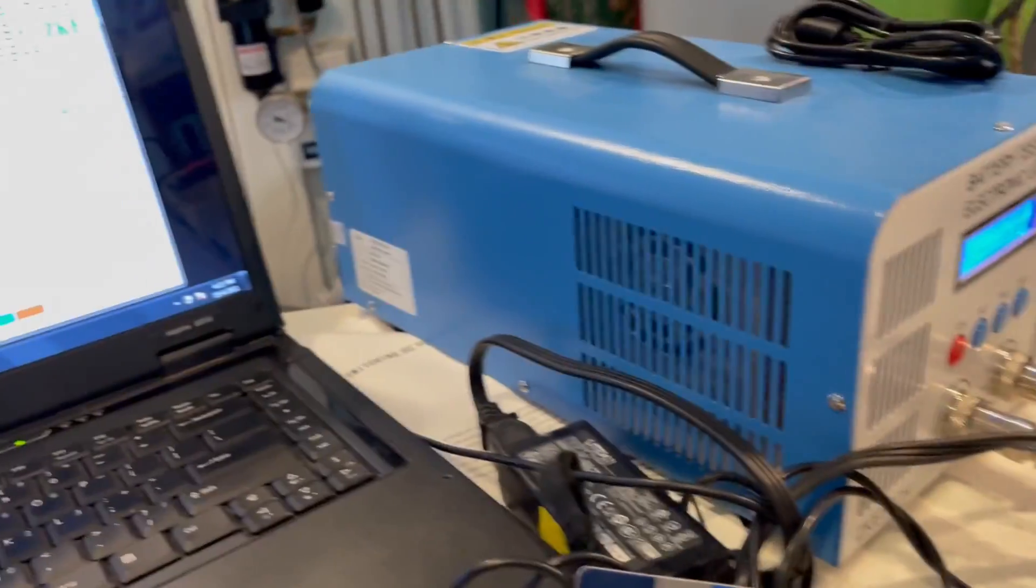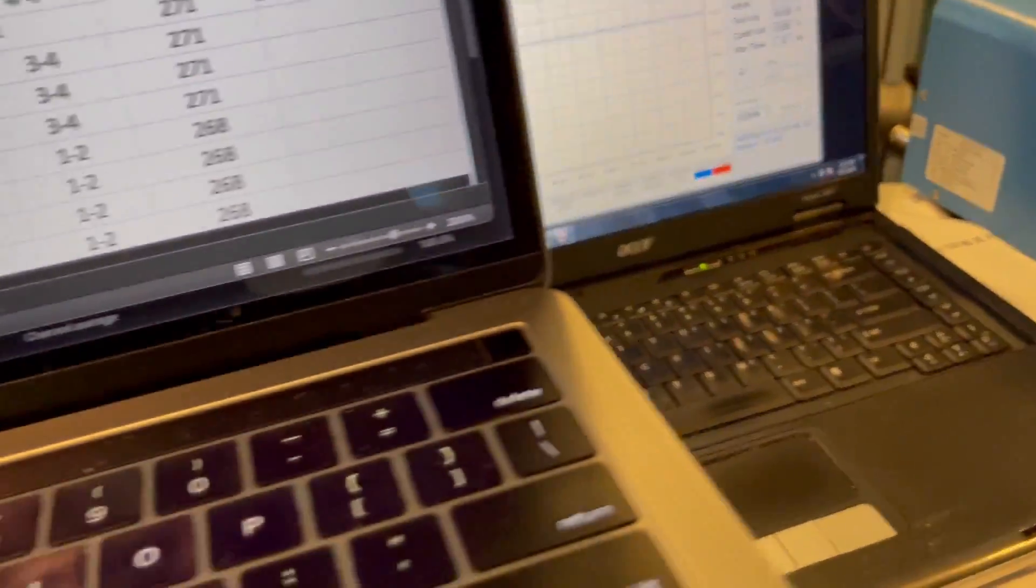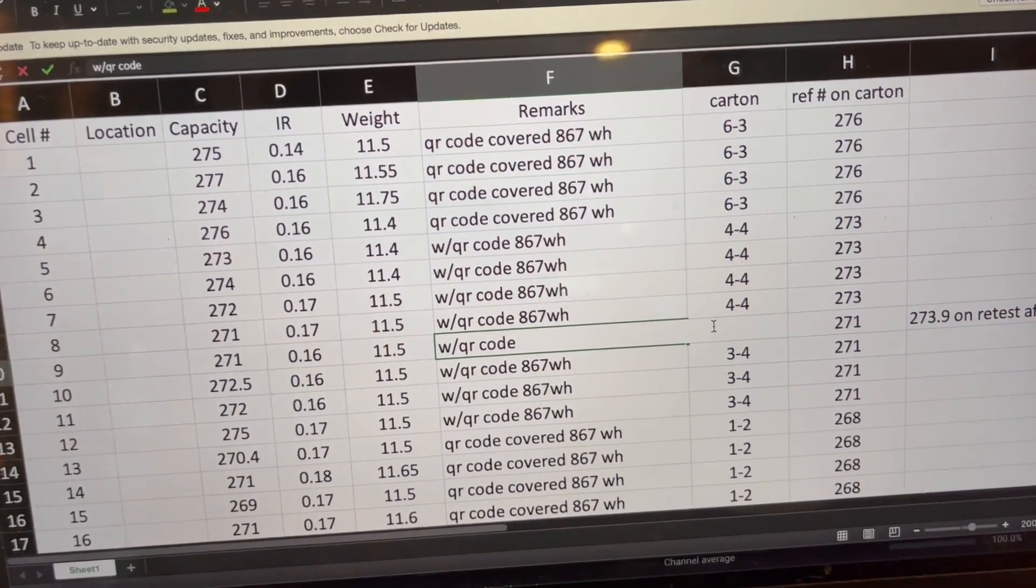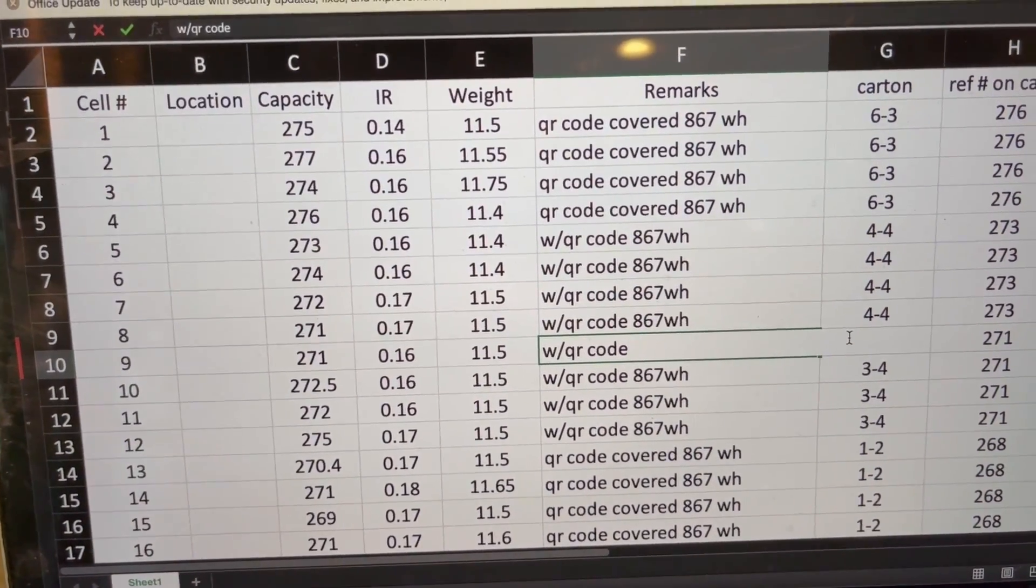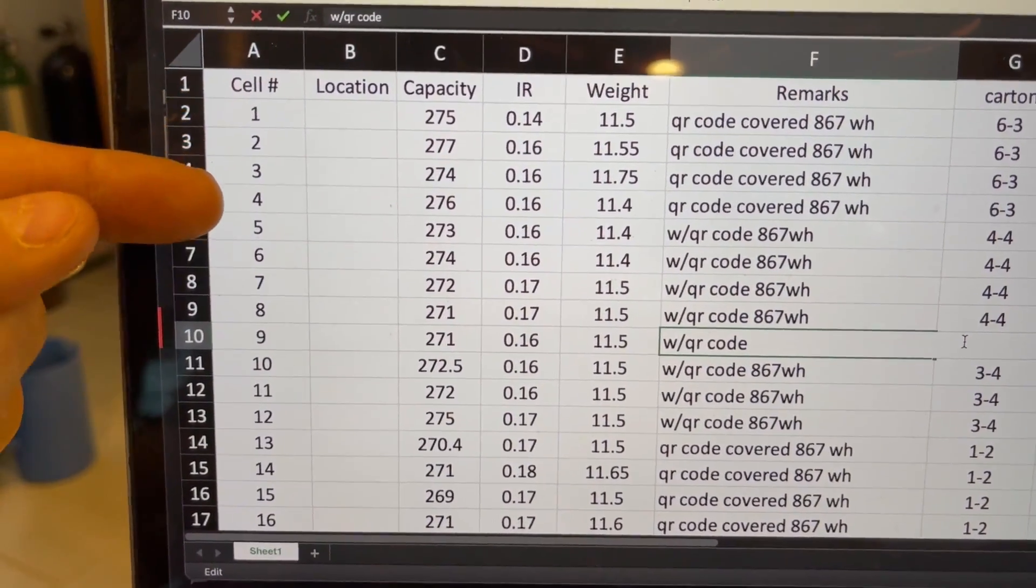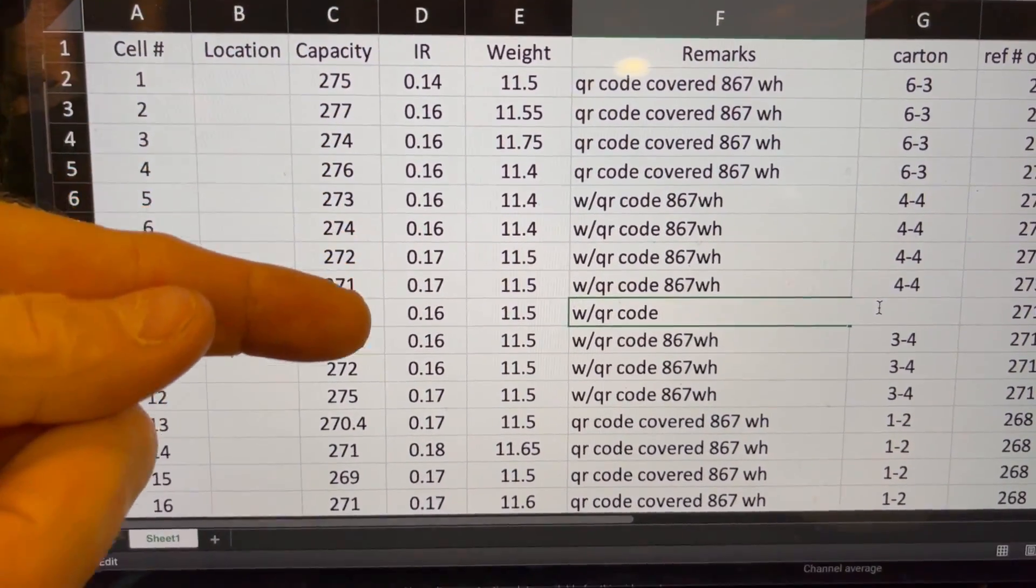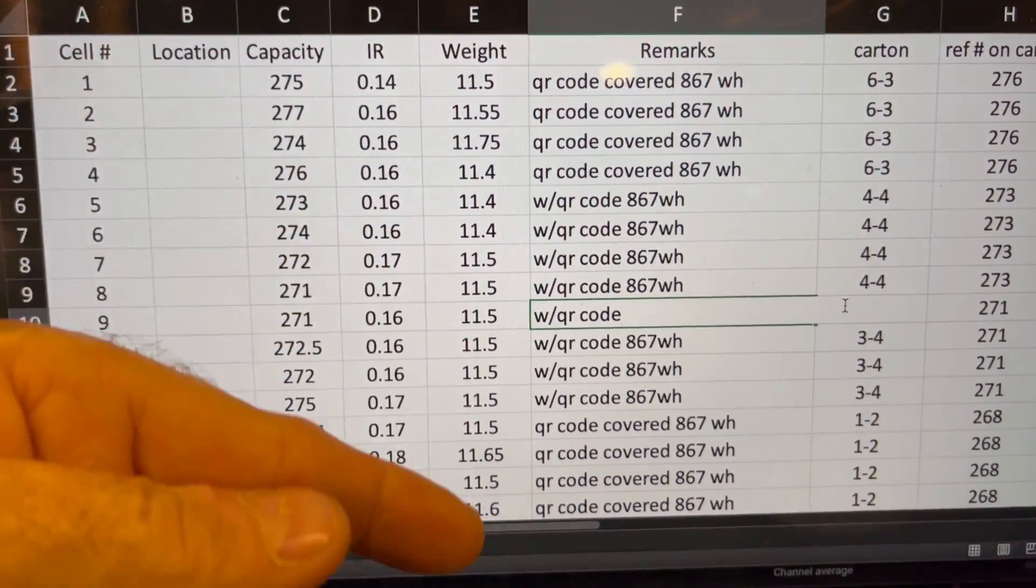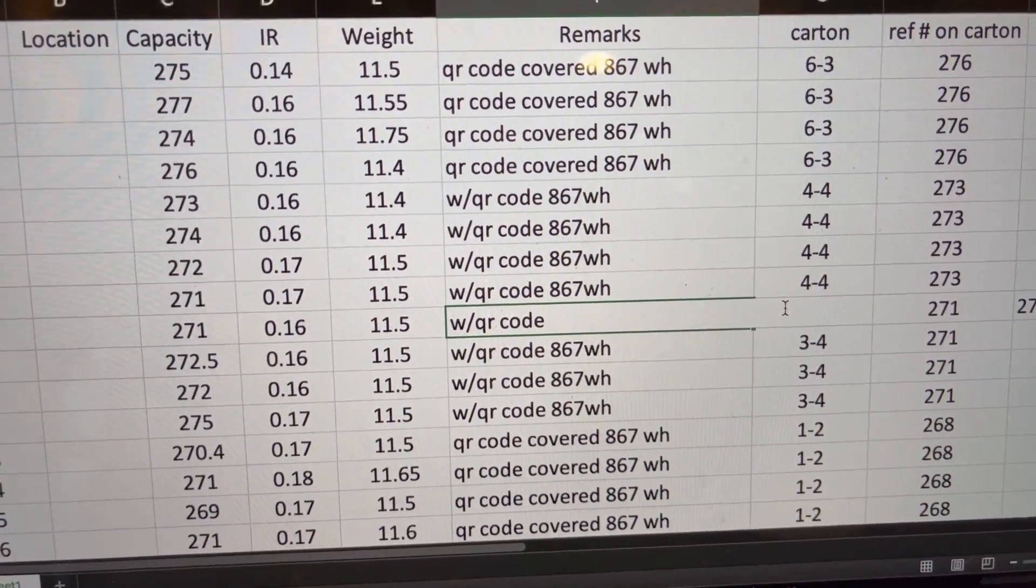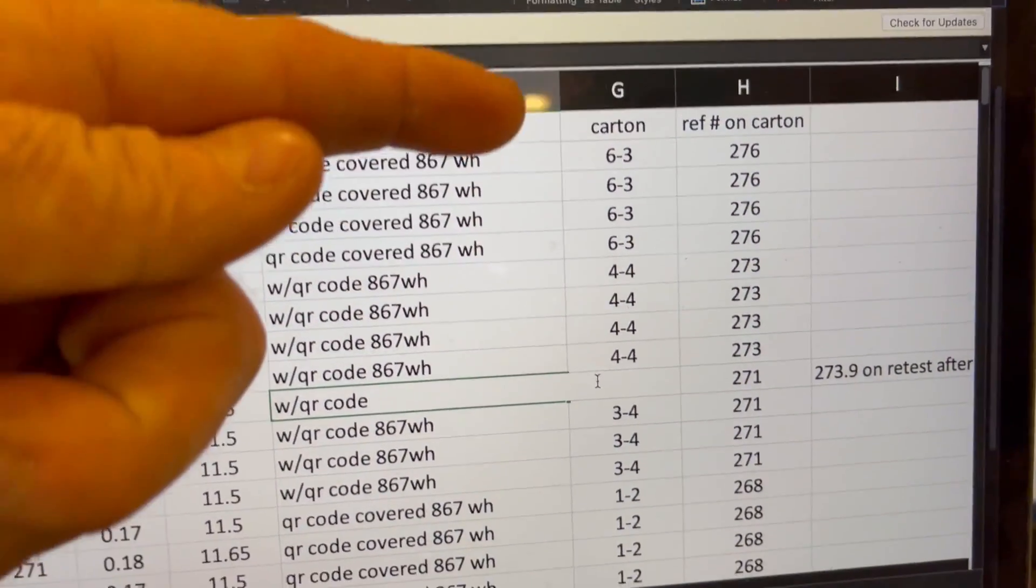So I have a spreadsheet where I'm documenting all of this. And I'm hoping this shows up on the video and isn't just a wavy mess in the video, but it looks clearer in real life. And I have documented, tallied every cell. I checked each one for internal resistance. I weighed each one and I noted whether or not it had a QR code or if the QR code was covered up and which box it came in.